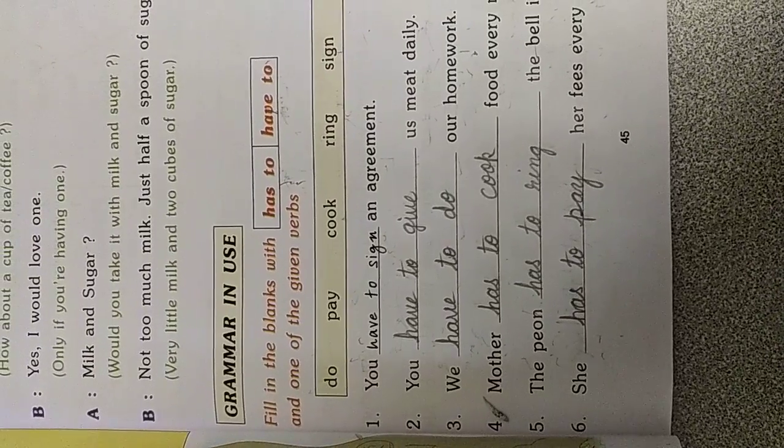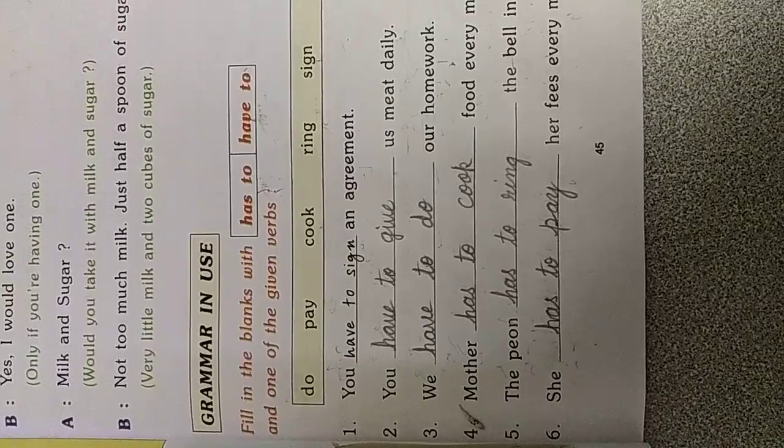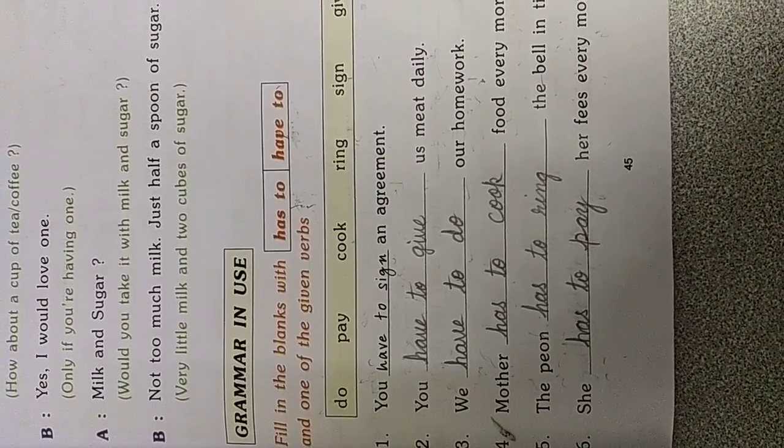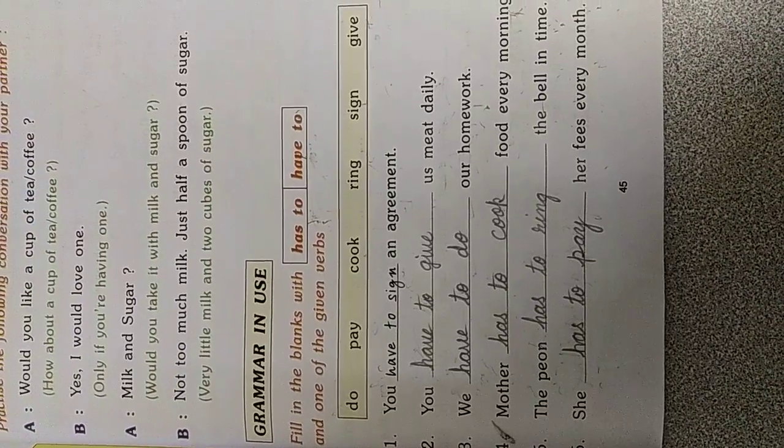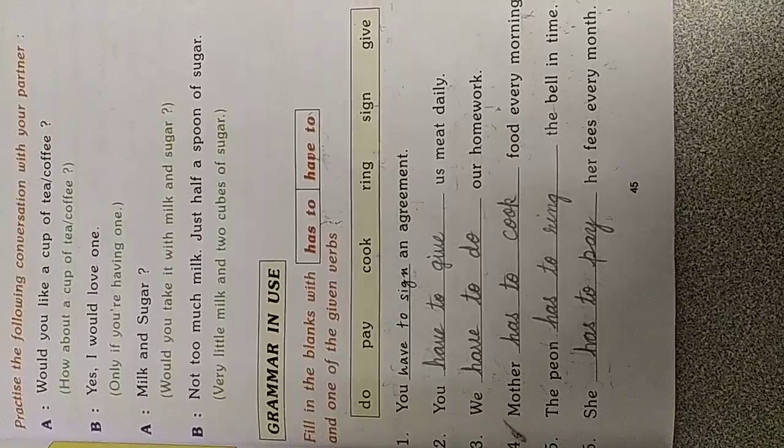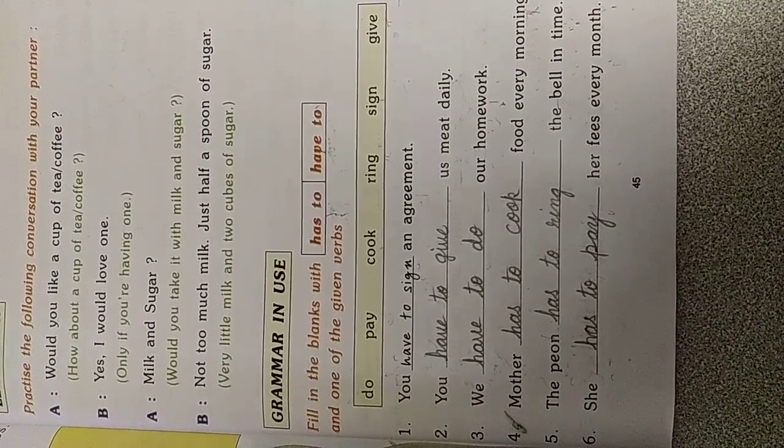You have to give us meat every day. We have to do our homework. Mother has to cook food every morning. The peon has to ring the bell in time. She has to pay fees every month. So, understood till here everyone?